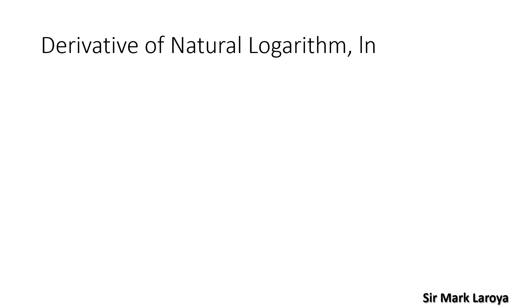So let us now proceed with the derivative of logarithmic functions. The first one is the derivative of natural logarithm or ln. So our function is in the form f(x) = ln(u), where u is also a function. The derivative of this function will be f'(x) = u prime over u. The most important thing here is to identify what is our u, get the derivative of u, and apply the formula.